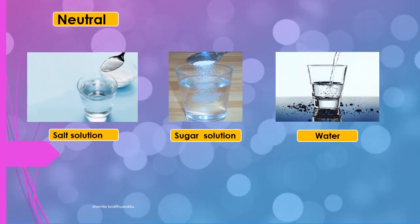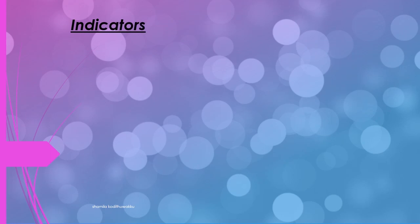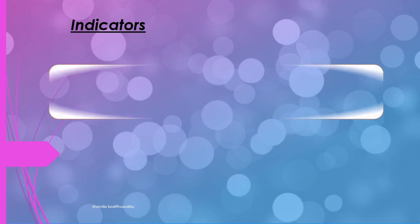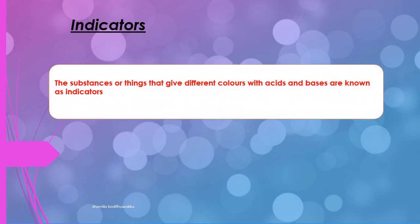What are the examples for neutral substances? Salt Solution, Sugar Solution, and Water. Indicators (Darshaka) — the substances or things that give different colors with acids and bases are known as indicators.